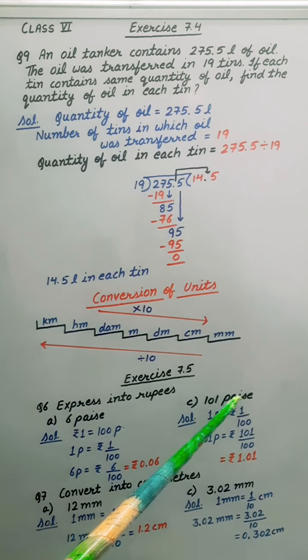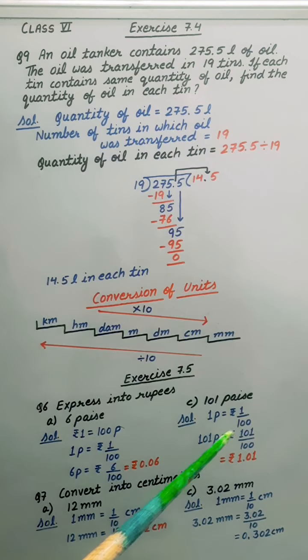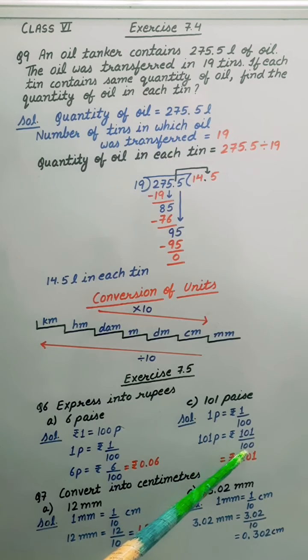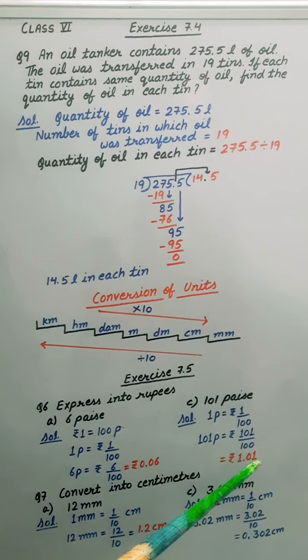Similarly, 101 paise is given. 1 paise is equal to rupees 1 by 100. 101 paise will be equal to 101 upon 100. Putting decimal because 2 zeros are there, so 1.01 is the answer.